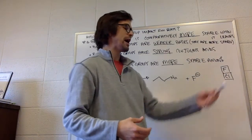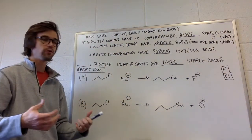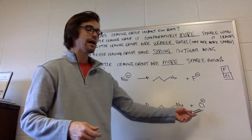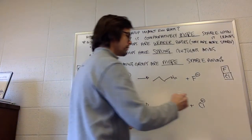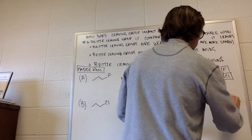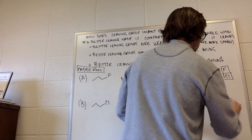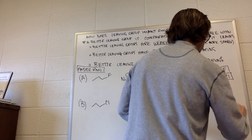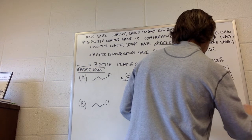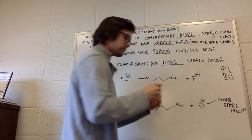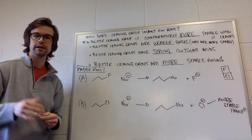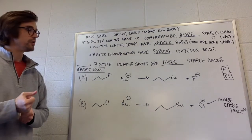So chlorine is farther down. It has a larger surface area than fluorine. So chlorine is actually more stable by itself. So this is more stable than F minus because of that increased surface area.